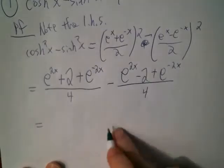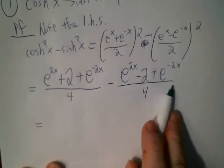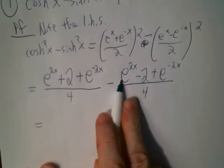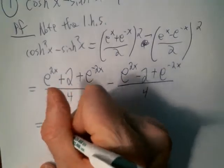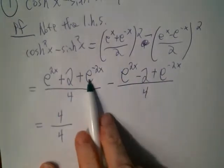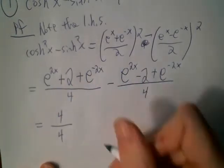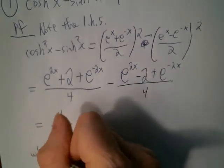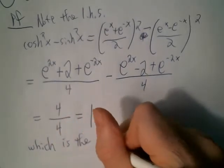Combining the numerators over the common denominator and distributing the negative: e^(2x) minus e^(2x) is 0, then 2 plus 2 is 4, and e^(-2x) minus e^(-2x) is 0. So we get 4 over 4, which equals 1 — the right-hand side of the identity.